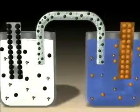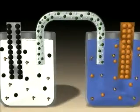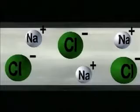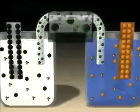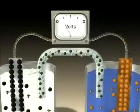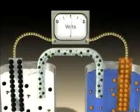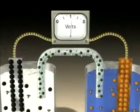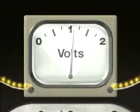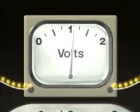The two solutions are connected by a porous sodium chloride salt bridge that prevents the two solutions from mixing but allows ions to migrate. Attaching a voltmeter to the cell shows that electrons flow from zinc to copper. The voltmeter reads 1.103 volts.